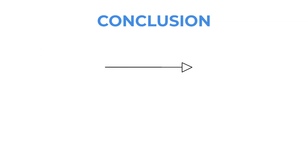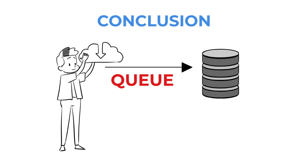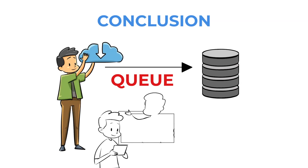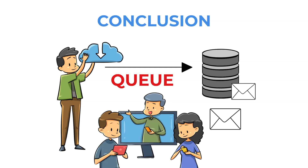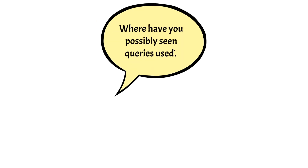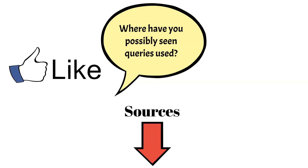In conclusion, a queue is one method for effectively organizing data, and numerous methods, as well as many existing complex solutions, support it. This enables easy data exchange between services and the organization of cross-domain information. Where have you possibly seen queues used? Let us know in the comments below. Make sure to give this video a thumbs up and subscribe to our channel for more videos like this. Thank you for watching and see you in the next one.